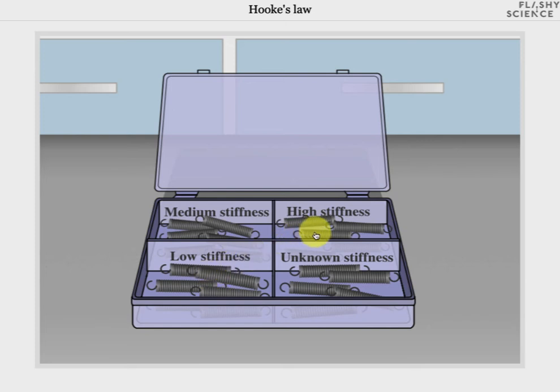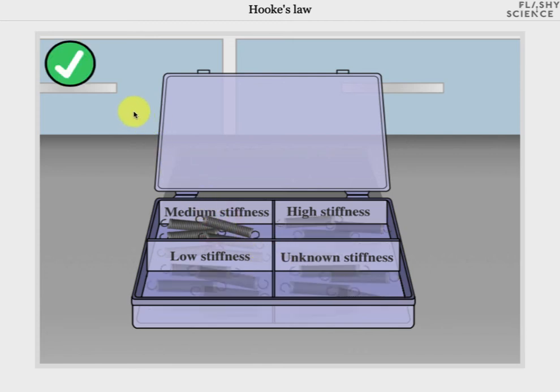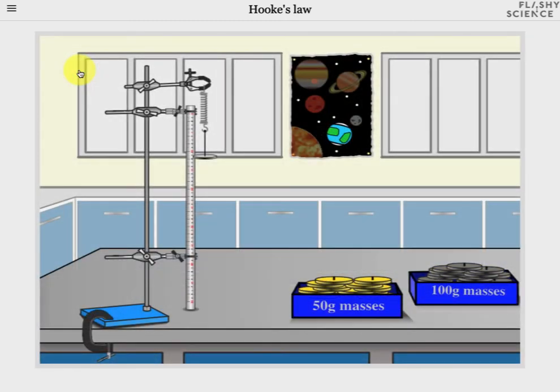Or you can choose a spring with low or high stiffness or a spring with unknown stiffness. I'm going to go back to the medium stiffness so click it to select it and then click the green and white confirm button in the top left of the screen. You'll now see it back in place in the main experiment.